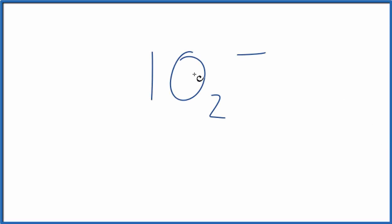In this video, we'll write the Lewis structure for IO2-. This is the iodite ion.